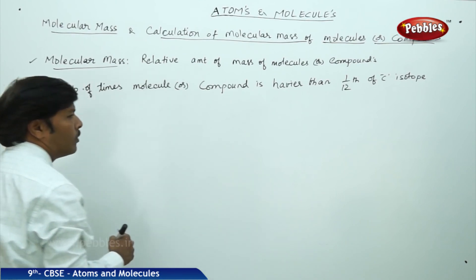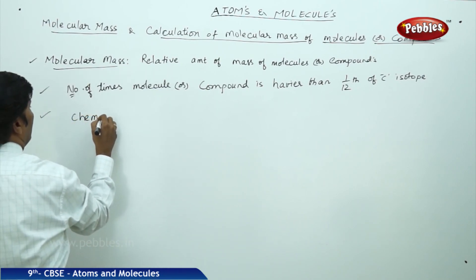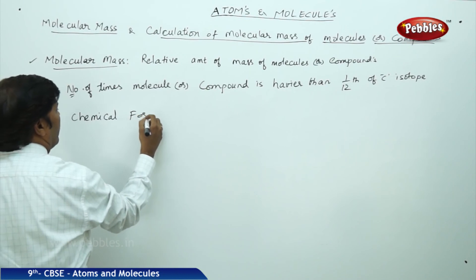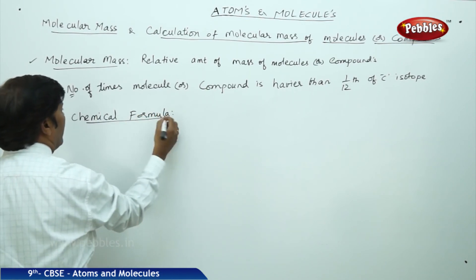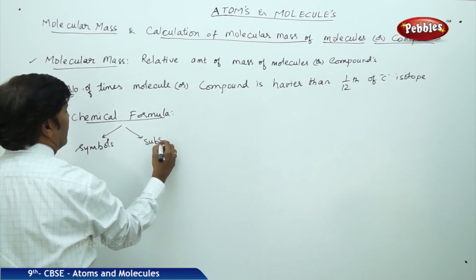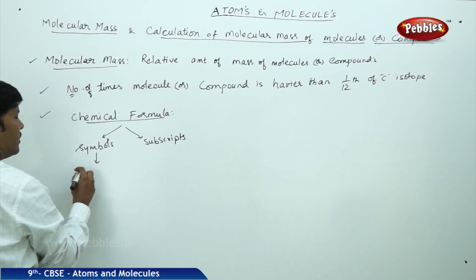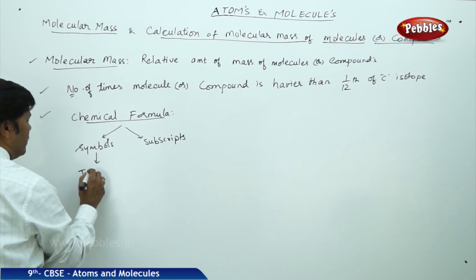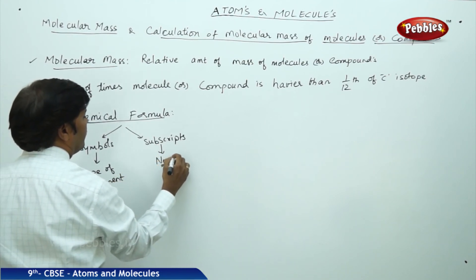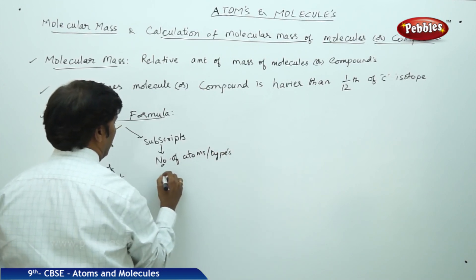When calculating molecular mass, you should also know the meaning of chemical formula or chemical composition. The chemical formula is made up of symbols and subscripts. The symbol gives the type of element, and the subscript gives the number of atoms and their types in the molecule.